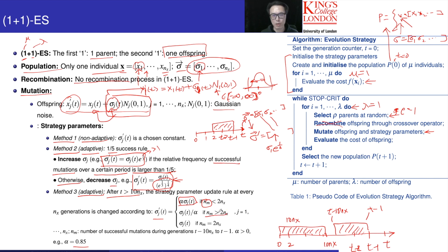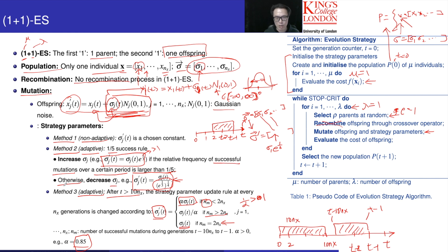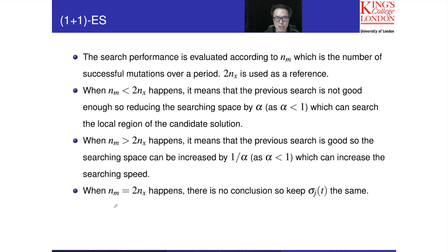If nm, the number of successful mutations, is larger than 2nx, we interpret the search as good enough, so we multiply sigma by 1 over alpha. Since alpha is 0.85, 1 over alpha is larger than 1, meaning sigma increases, giving a larger step size to speed up the search. When nm equals nx, we cannot make a decision about whether the search is good or not, so we do nothing and keep sigma unchanged. This summarizes the three cases: nm less than 2nx, greater than 2nx, and equal to nx.